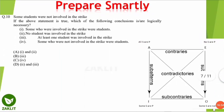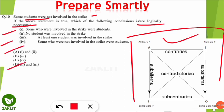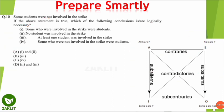The square of opposition questions are based on a specific logical framework. For example, a sample question might say 'some students were involved in a strike' and ask you to identify which conclusion is logically necessary or correct. Questions also ask you to identify contraries, contradictories, and subalterns — all based on the square of opposition concept.